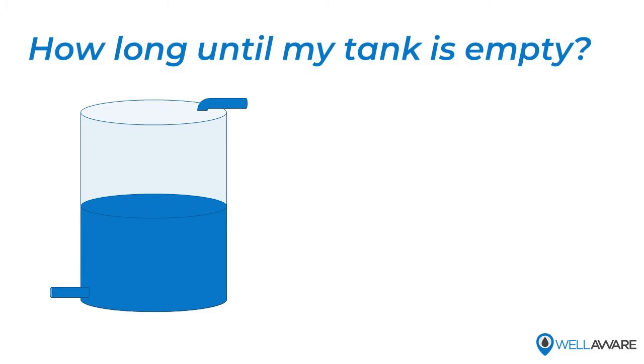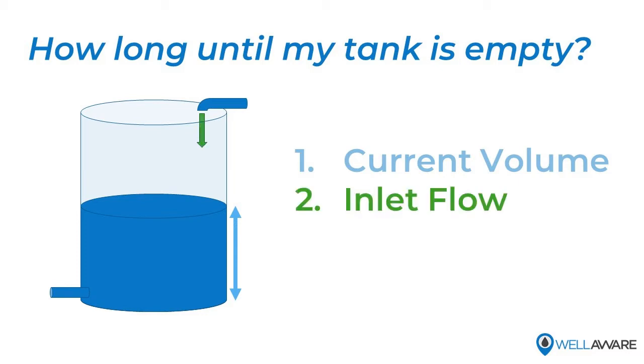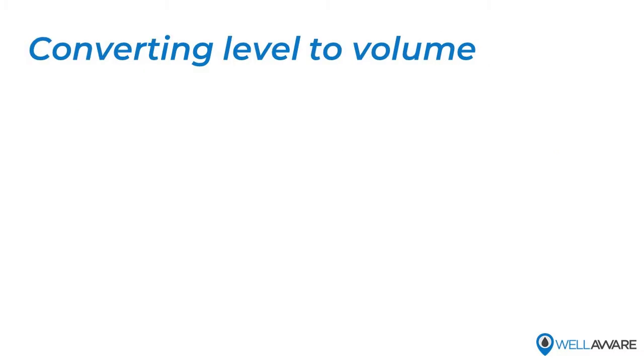All right, so our goal is to predict how much time we have until our tank goes empty. So we need to account for three variables here. First is the current volume of water in the tank. Second is the rate at which the tank is filling, or we could call that the inlet flow. And then the third is the rate at which the tank is emptying - we call it the outlet flow. So let's do a little whiteboard math here.